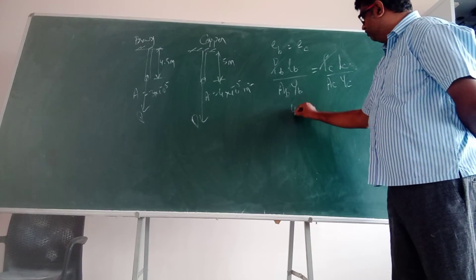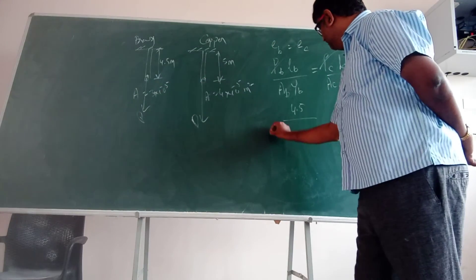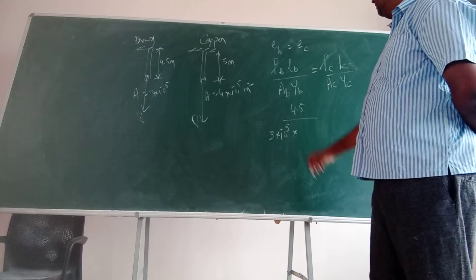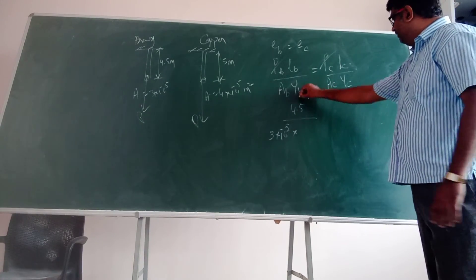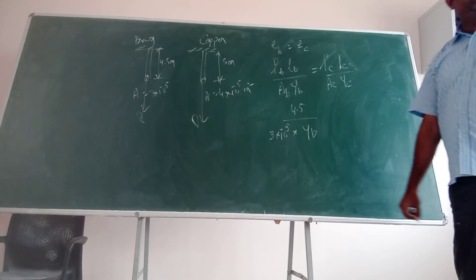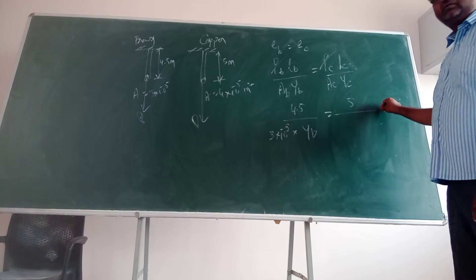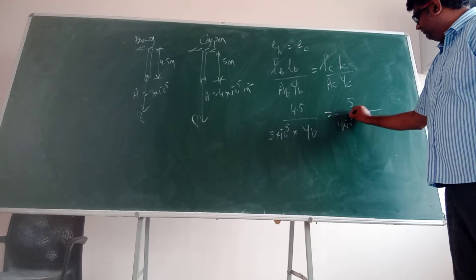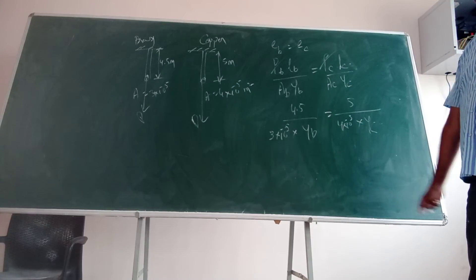And length, are they same? They are not same. So this is 4.5 divided by area of brass. It is given as 3 into 10 to the power of minus 5 into Young's modulus of brass. In the question he is asking you Y_B and Y_C. So Y_B you do not know. Y_B is equal to L_C. What is L_C? 5. What is area? 4 into 10 to the power of minus 5 into Y_C. Can't you find Y_B by Y_C?